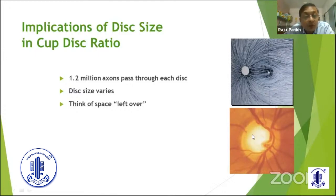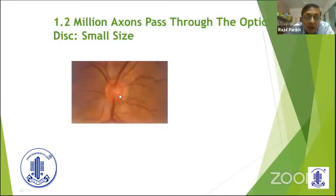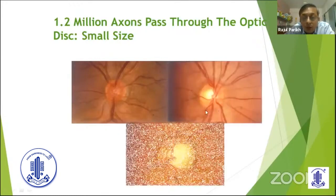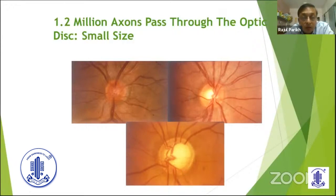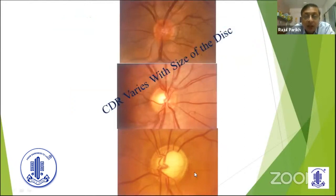If you have a small disc, the leftover space is very small and the cup is small. On the other hand, if you have a big disc, the leftover space is large and the cup is big — but this is normal and physiological. So the cup-disc ratio varies according to the disc size. If you use only CDR for the diagnosis of glaucoma, you are going to miss glaucoma if the disc is small, and over-diagnose glaucoma if the disc is large. So please refrain from that. Cup-disc ratio is directly related to disc size.